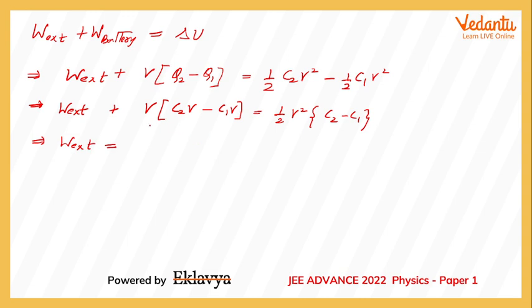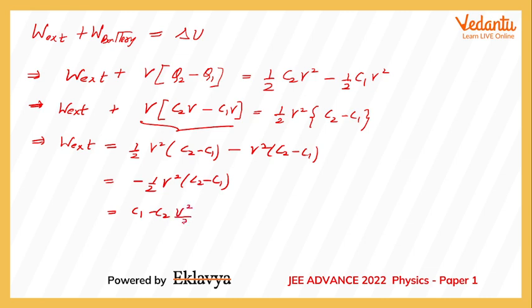Work done by external agent can be written as—I'll take this quantity on the other side. I'll first write whatever was present on the right-hand side, so it will become half V squared into C2 minus C1 minus V squared into C2 minus C1. It turns out to be minus half V squared of C2 minus C1, or we can say C1 minus C2 into V squared by 2.